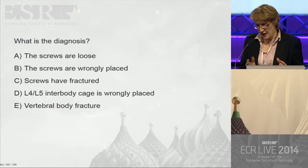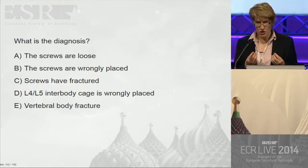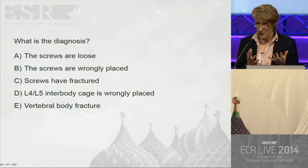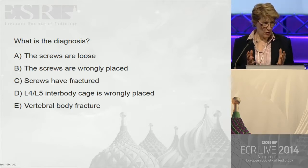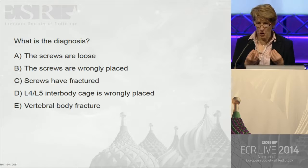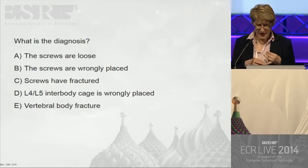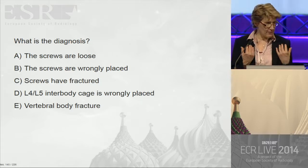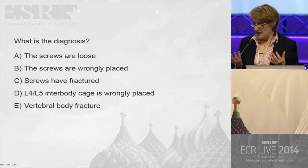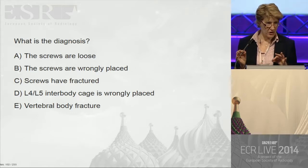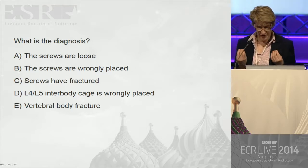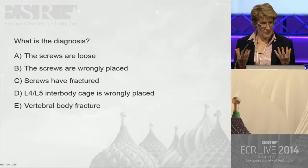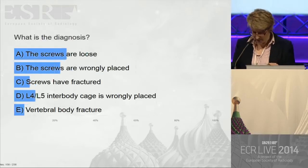When patients have screws in situ and develop new symptoms, the key questions are: are the screws fractured, are they in the right place, and have they started to become loose or backing out? With additional metalwork such as an interbody cage in situ, look at those as well, and consider whether bone may have become weak and whether fracture is a possibility.